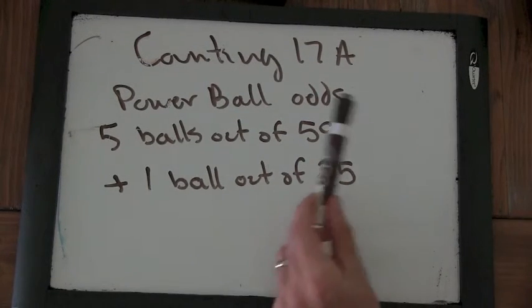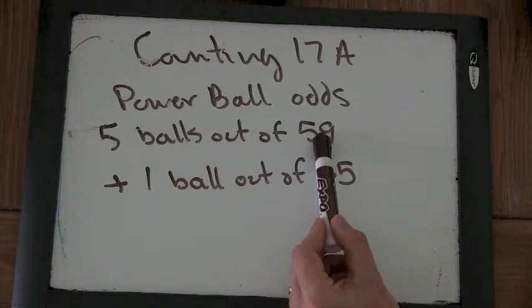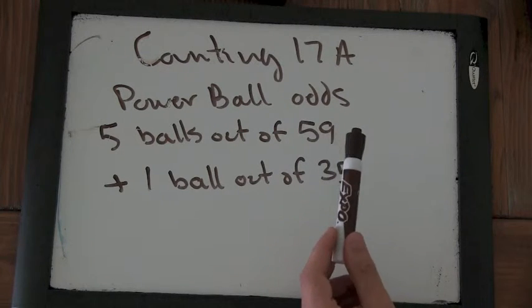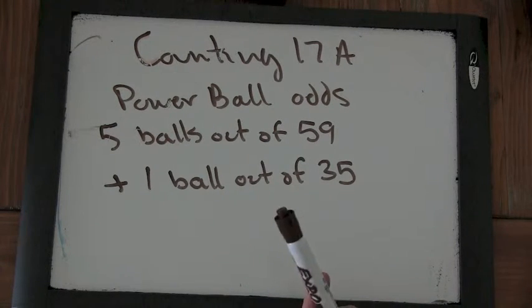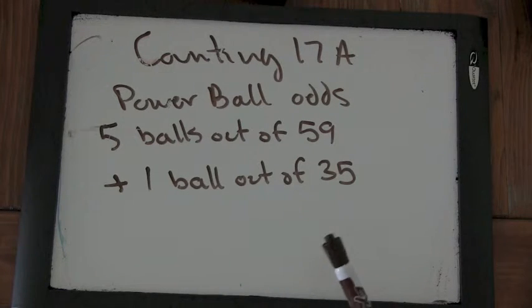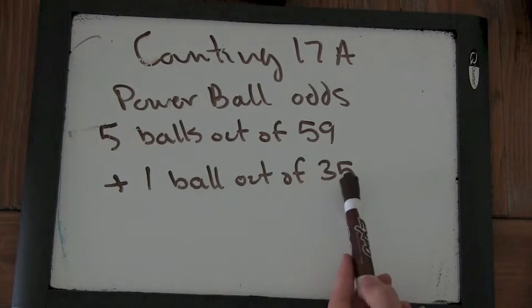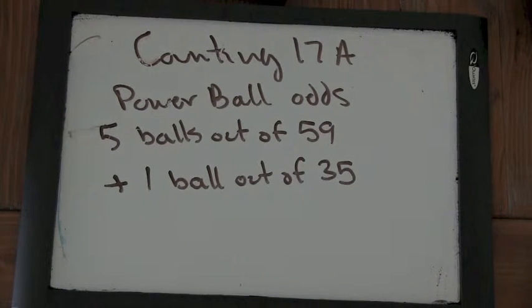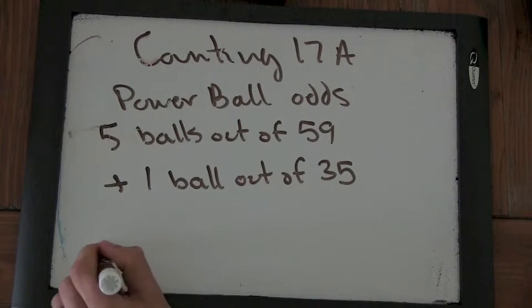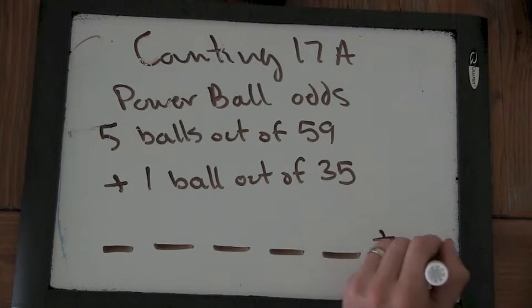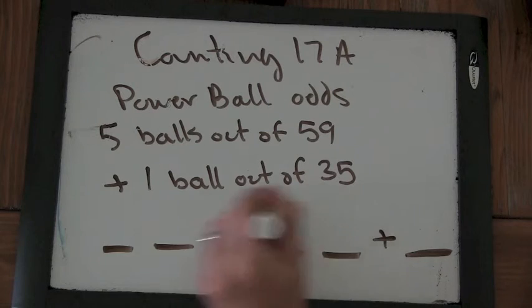So the way Powerball works is there's five balls picked out of 59. So there's 59 balls numbered one, two, three up to 59 in some sort of container. And they pick out five randomly. And then separately they pick one ball out of a different container that has 35 balls and that's the Powerball.